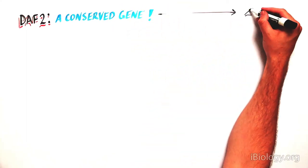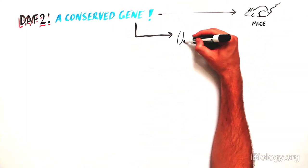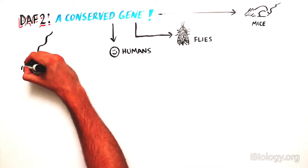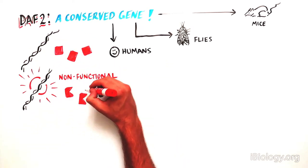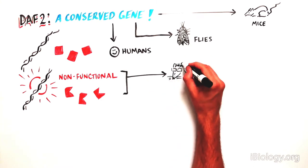DAF2 is a conserved gene that is also found in many other species including mice, flies and humans. When DAF2 is nonfunctional, mice and flies live longer as well.